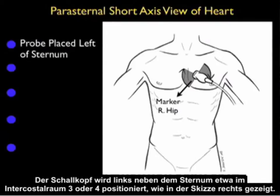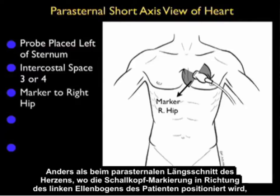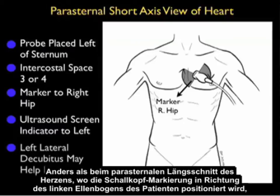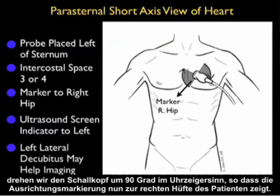The probe will be placed just left of the sternum at about intercostal space 3 or 4 as shown in the pictorial here to the right. In variance to the parasternal long axis view, where the probe marker was positioned down towards the patient's left elbow, we'll swivel the probe 90 degrees clockwise so now the marker is down towards the patient's right hip.